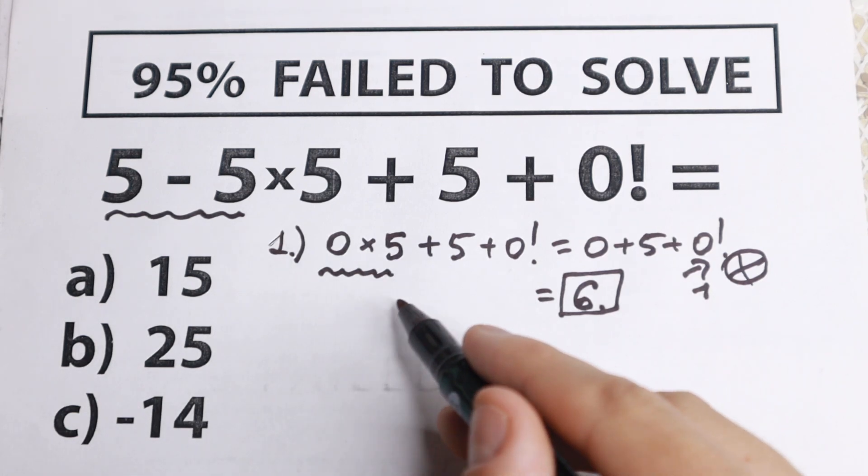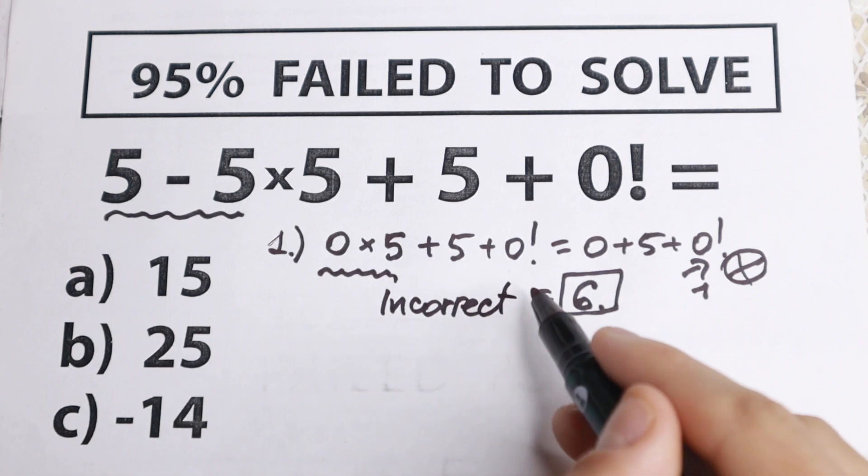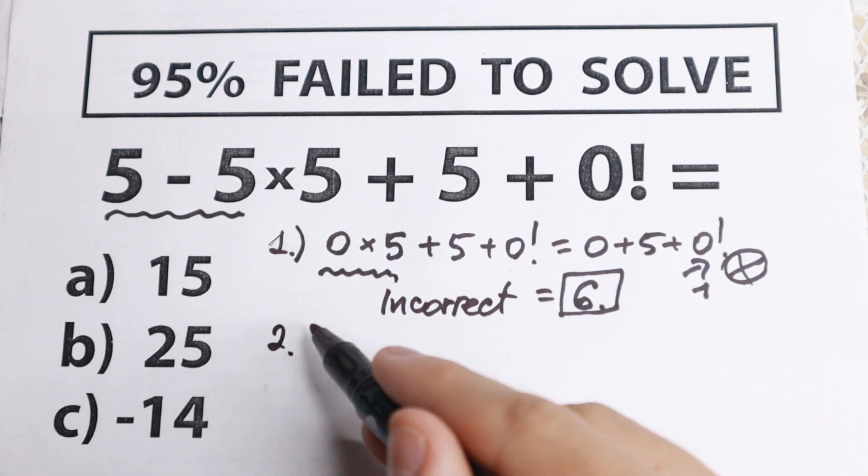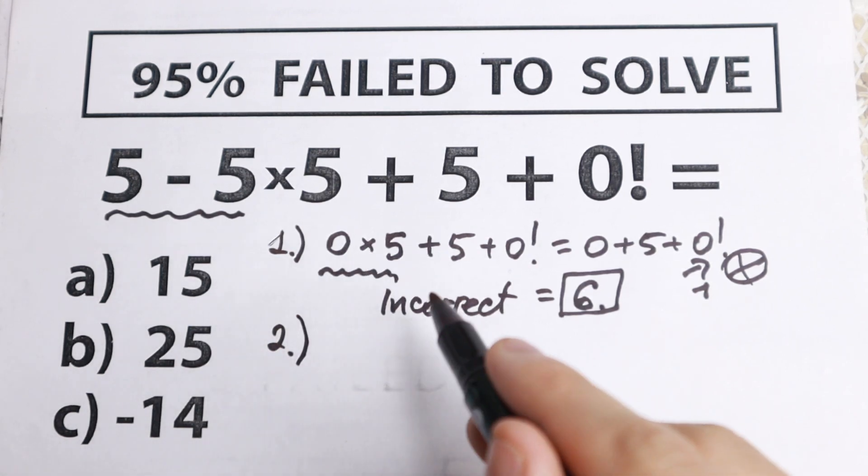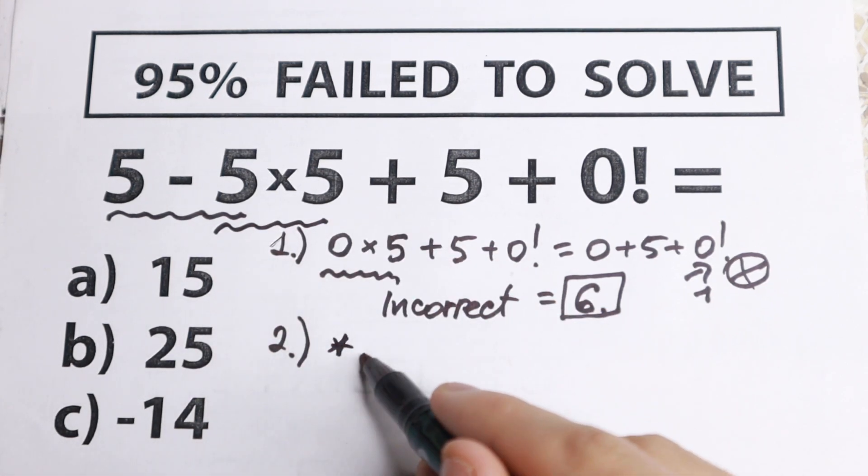But how can we solve it correctly? Forget this method—this is incorrect. I showed you because many students start with subtraction or addition, but in our case we have multiplication, so we need to start with the multiplication.